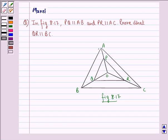Hello and welcome to the session. My name is Mansi and I am going to help you with the following question. The question says in figure 8.17, PQ is parallel to AB and PR is parallel to AC. Prove that QR is parallel to BC.